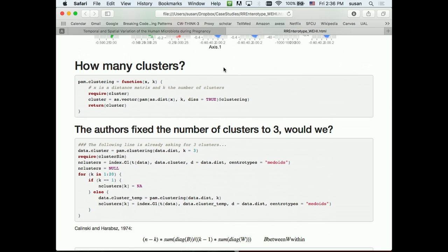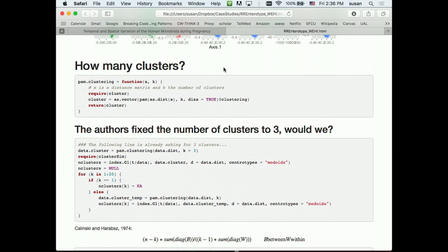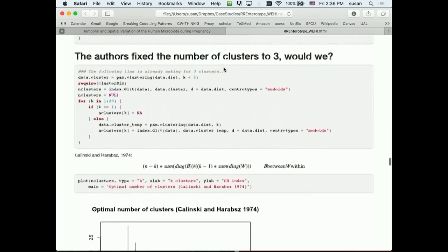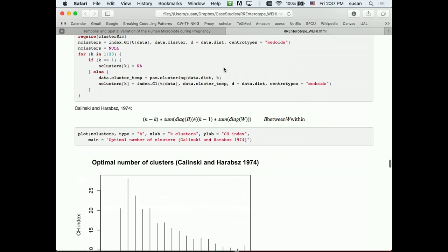So you might use a different clustering variable, and you can ask the question, how many clusters were there? So the authors of the paper decided that there were three clusters, and the way they did it was completely heuristic.